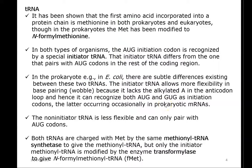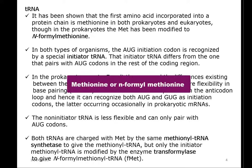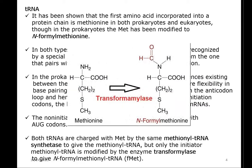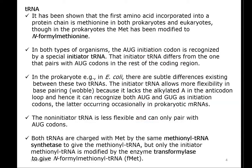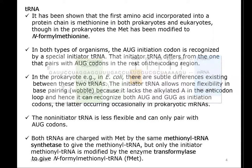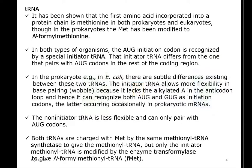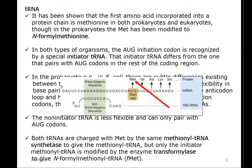The first amino acid incorporated into the protein chain during translation is methionine, both in prokaryotes and eukaryotes. In prokaryotes, methionine is modified into N-formyl methionine, which is the first amino acid to be added during the translation process. In both types of organisms, AUG serves as the initiation codon, recognized by a special initiator tRNA. The initiator tRNA is charged with N-formyl methionine by tRNA synthetase and starts the translation process.